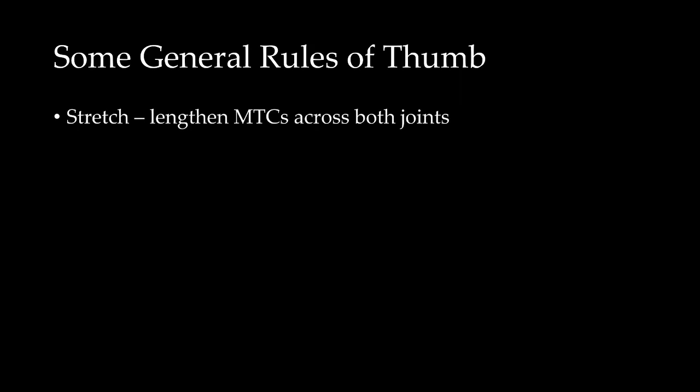With these ideas in mind, let's go over some general rules concerning exercises involving biarticular MTCs. First, if you wish to stretch the biarticular MTC, you must lengthen it across both joints. If you try to lengthen it across one joint but allow it to shorten over another, the overall length won't change, or won't change that much, and you won't effectively stretch that MTC.